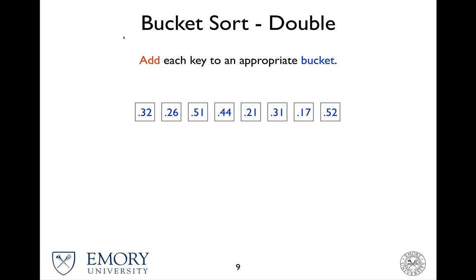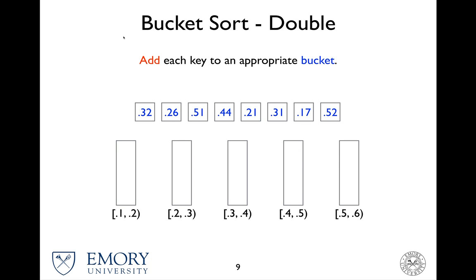Here, luckily, we know the range. From 0.1 to 0.6, we decide to have five buckets. You can have as many buckets as possible because the numbers are continuous in this case. So given this, we add everything into the bucket as it goes.